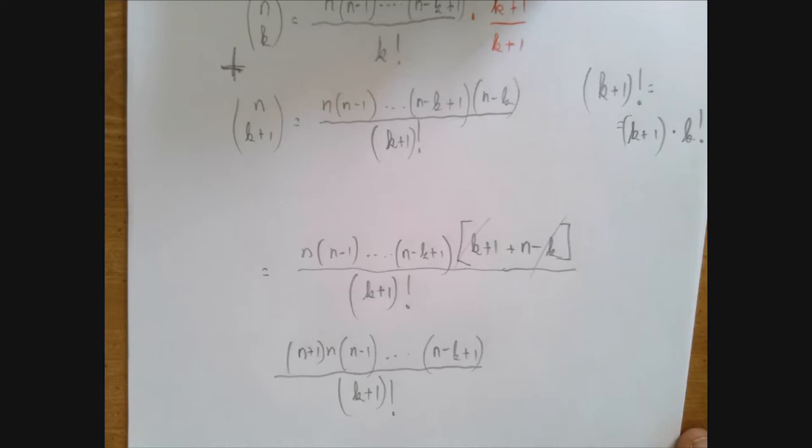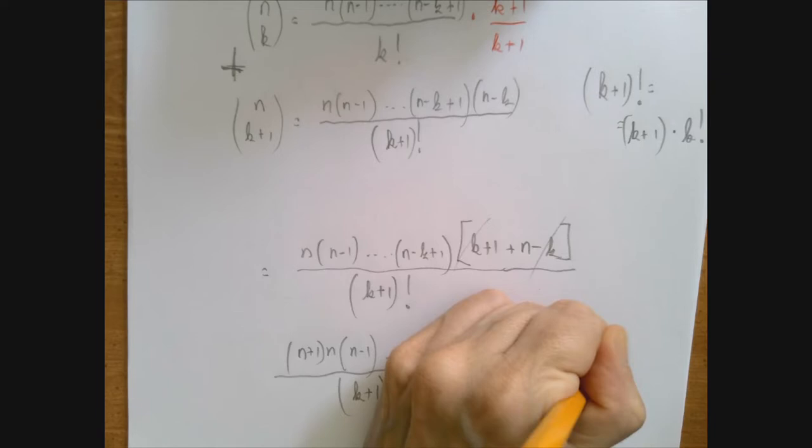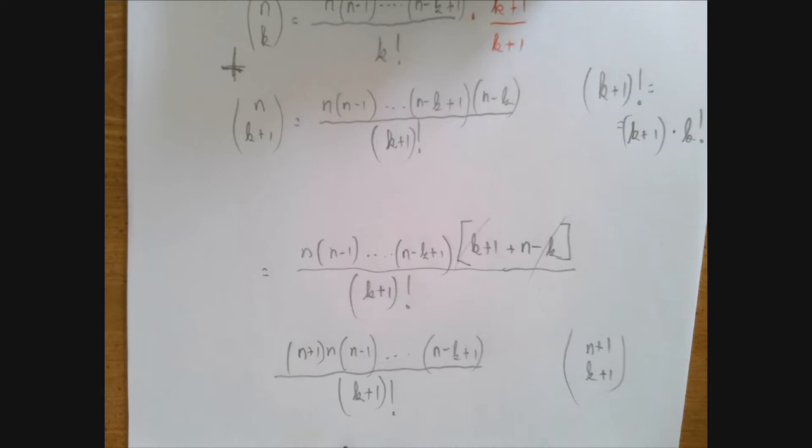That kind of belongs here. So what we have is n plus 1 times n times n minus 1 all the way till n minus k plus 1 divided by k plus 1 factorial. Our proof is complete if this is really just n plus 1 choose k plus 1. And the denominator works. So what we have to do is to figure out whether the numerator is what it should be. We should have exactly k plus 1 factors here.